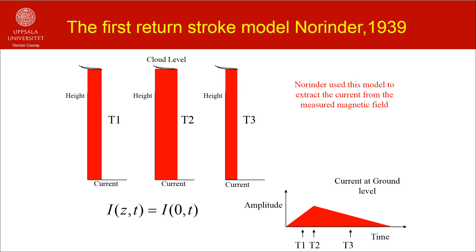The first return stroke model ever was introduced by Norinder in 1939. He assumed that the current in the return stroke channel exists all the way from ground to cloud from the very beginning of the return stroke, and that the current is the same at any point on the return stroke channel. That is, the current at any point on the channel is equal to the current at the channel base at that time. Since the current at the channel base is changing as a function of time, the current along the whole channel varies with time in accordance with the channel base current. Norinder used this model to estimate the return stroke current from measured fields.